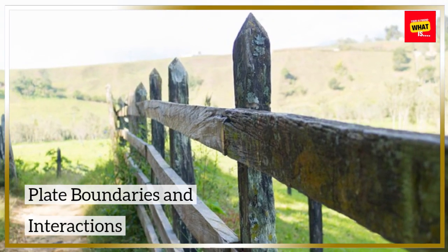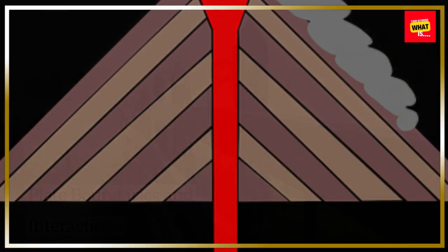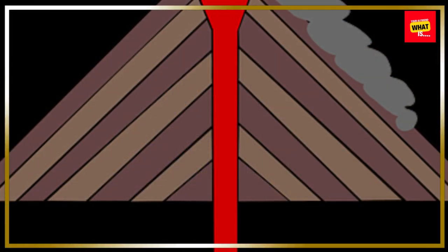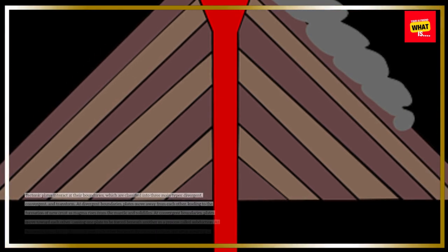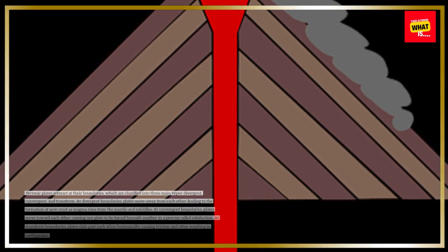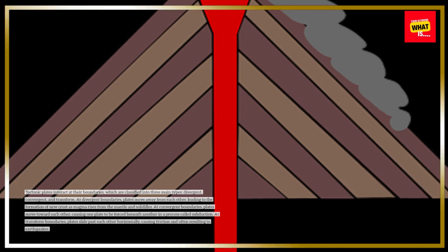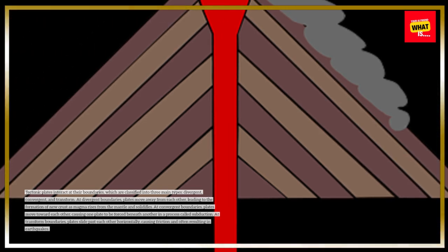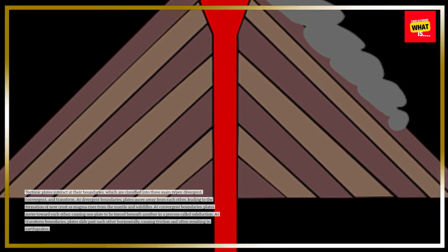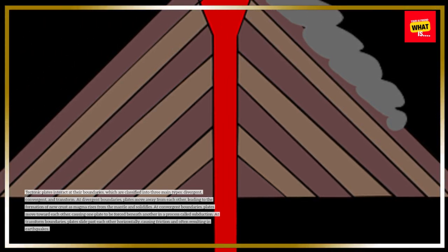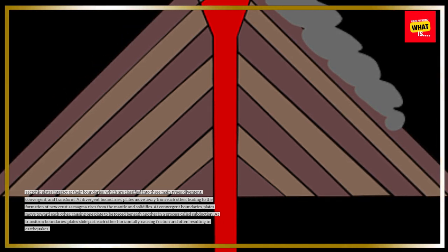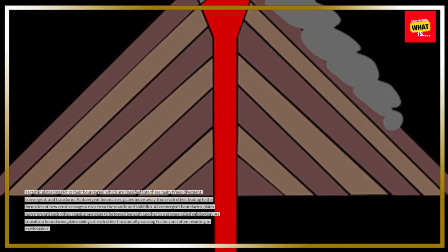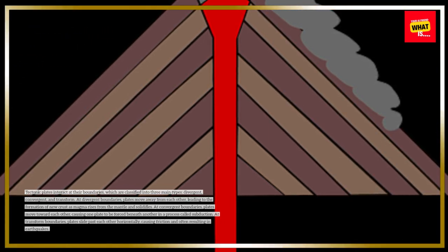Plate Boundaries and Interactions. Tectonic plates interact at their boundaries, which are classified into three main types: divergent, convergent, and transform. At divergent boundaries, plates move away from each other, leading to the formation of new crust as magma rises from the mantle and solidifies.